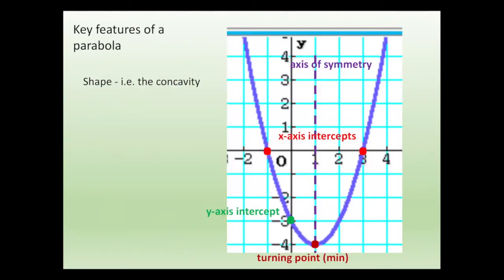Very quickly recapping the key features of a parabola. You need to know the shape or the concavity — which is concave up, the U shape, or concave down, which is the N shape. Then you need to know the axis of symmetry, the x-axis intercept or the roots, the y-axis intercept, and then the turning point. With all these key features, you should be able to sketch a parabola.